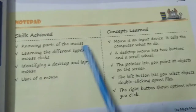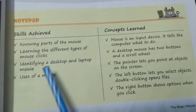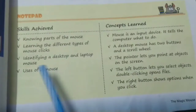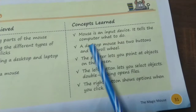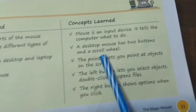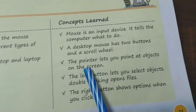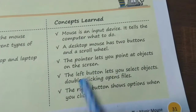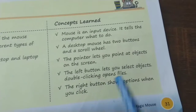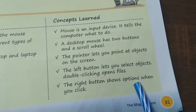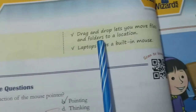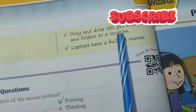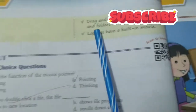Skills achieved: knowing parts of a mouse, learning the different types of mouse clicks, identifying a desktop and laptop mouse, and uses of a mouse. Concepts learned: mouse is an input device that tells the computer what to do. A desktop mouse has two buttons and a scroll wheel. A pointer lets you point at objects on the screen. The left button lets you select objects. Double clicking opens files. The right button shows options when you click. Drag and drop lets you move files and folders to a location. Laptops have a built-in mouse.